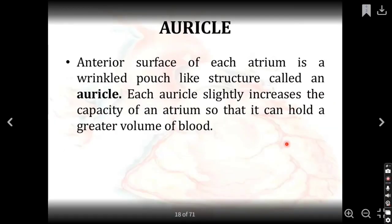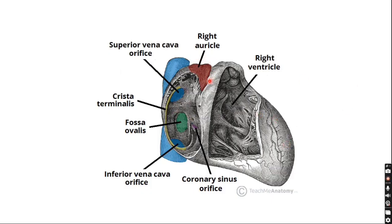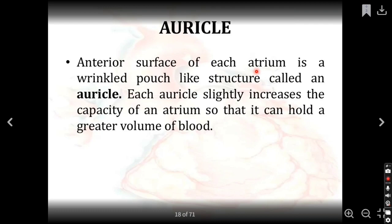Coming to the auricles. The name indicates an ear lobe shape. Each of the two atria has an outer pouch called an auricle. It is an extra cardiac structure — an additional wrinkled pouch that creates extra space, slightly increasing the capacity of the atrium so that it can hold a greater volume of blood.